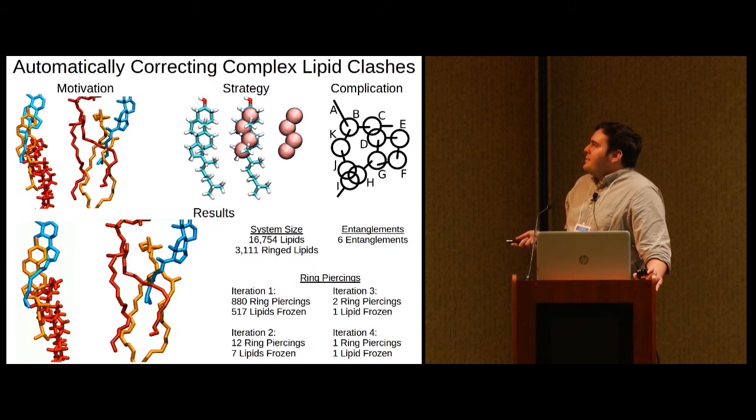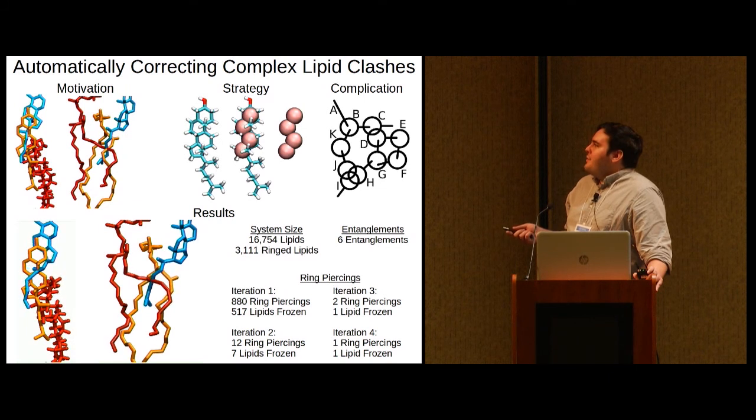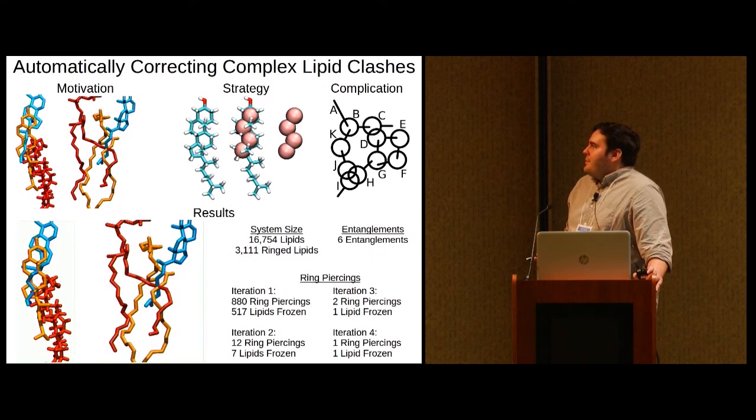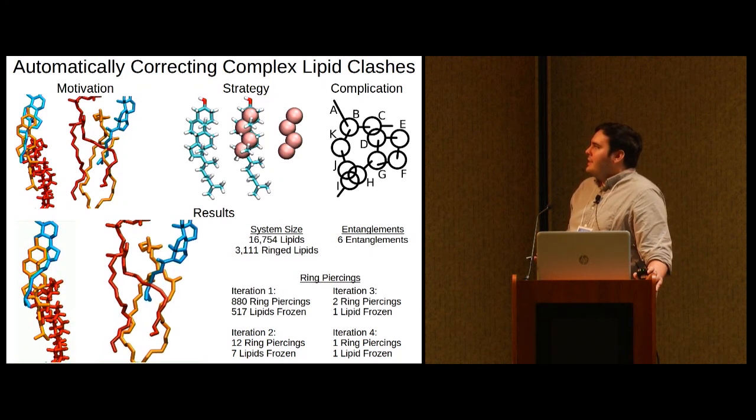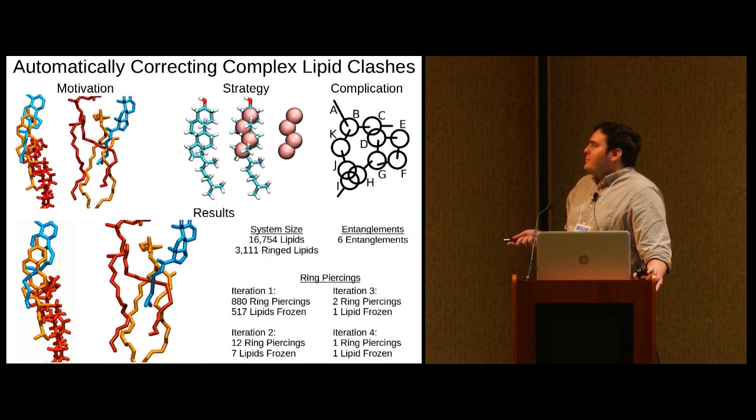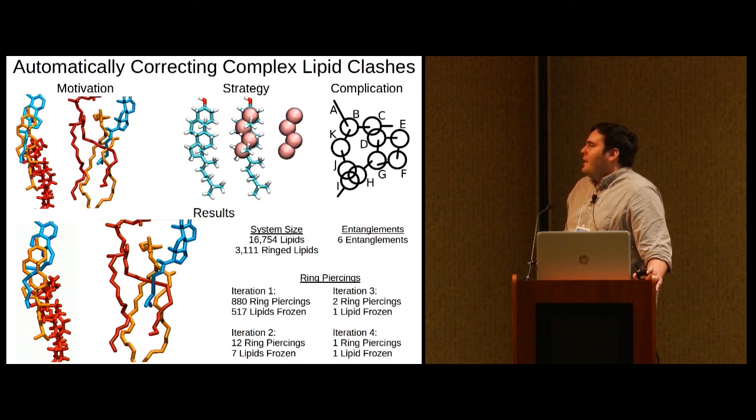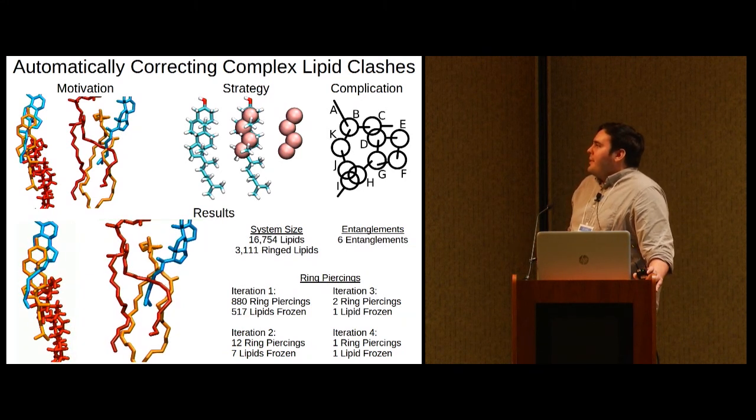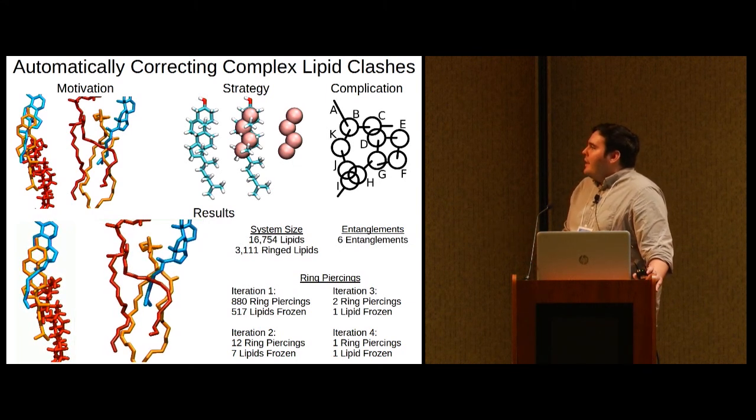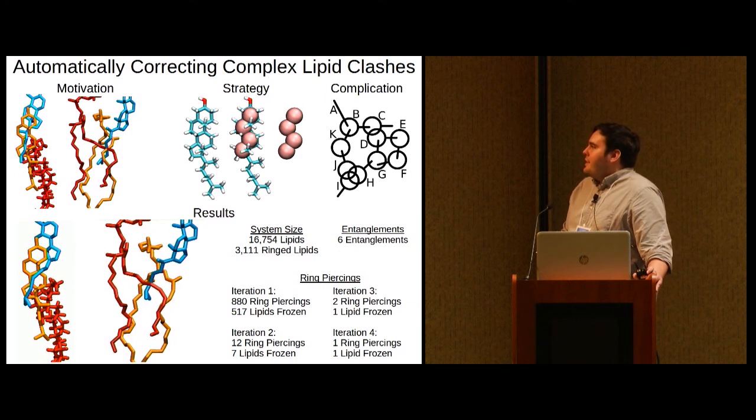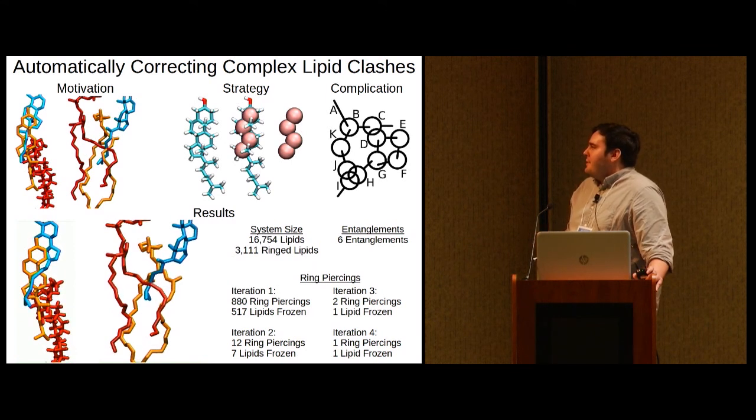And they also can't be dealt with by the standard energy minimizer because they represent local energy minima. So our strategy for fixing ring piercings is to replace the pierced rings of the lipid with large Leonard-Jones particles and then hold them fixed during a standard energy minimization simulation. This makes it energetically unfavorable for other atoms to be in the vicinity of the fixed particles. And so with just 500 steps of minimization, the minimizer is able to quickly resolve the ring piercing. The situation is similar for a lipid entanglement. We just take one of these large particles and plop it in the center of the entanglement. This again makes it energetically unfavorable for the entanglement to exist, and so the minimizer is able to resolve the situation.